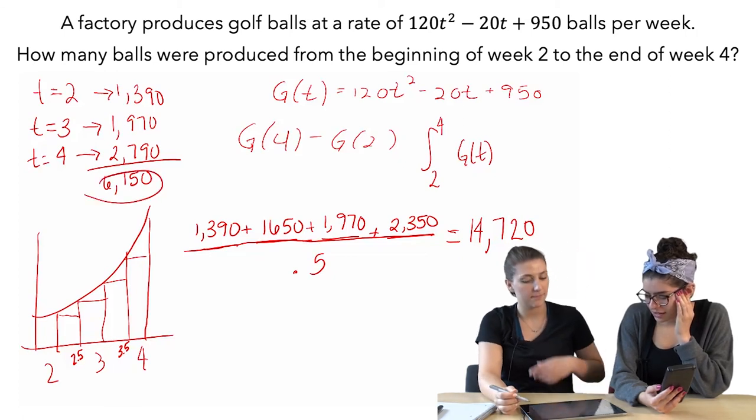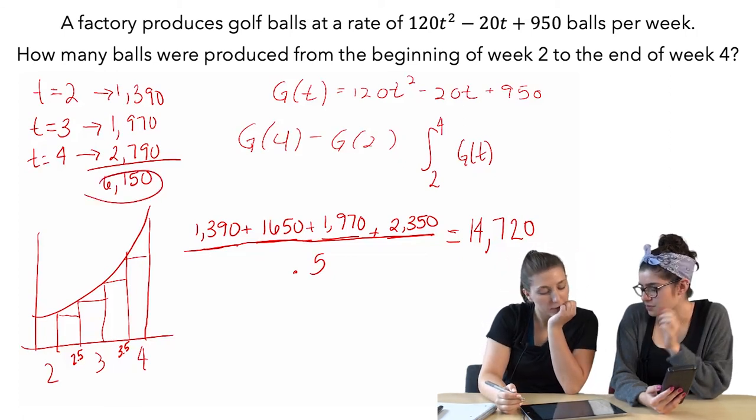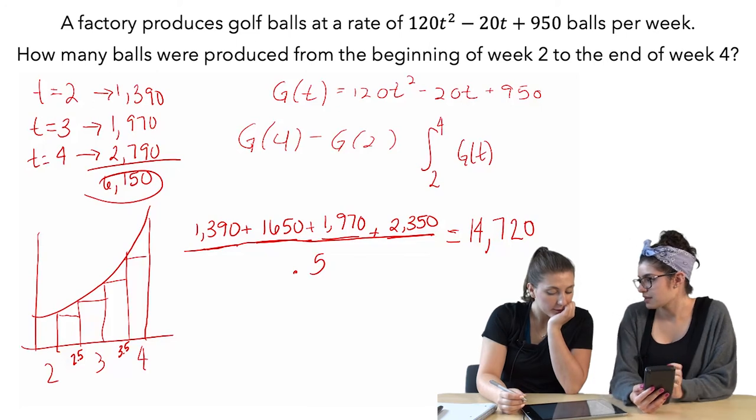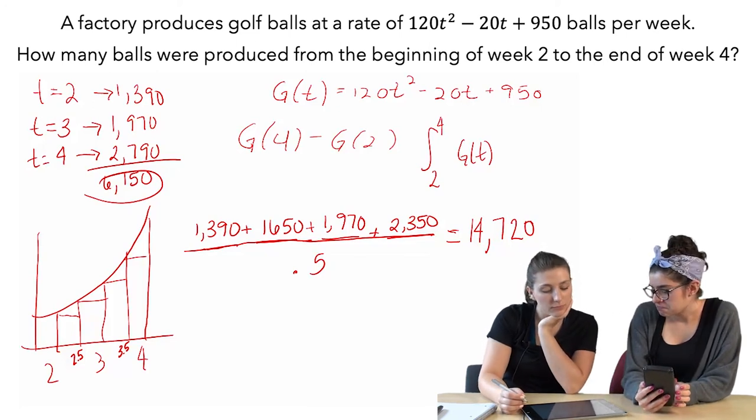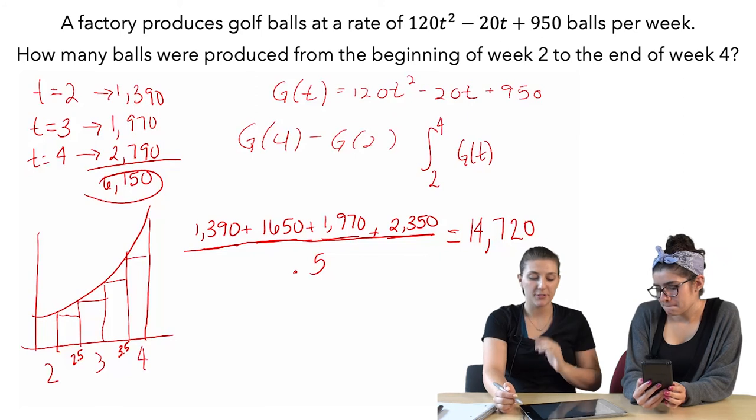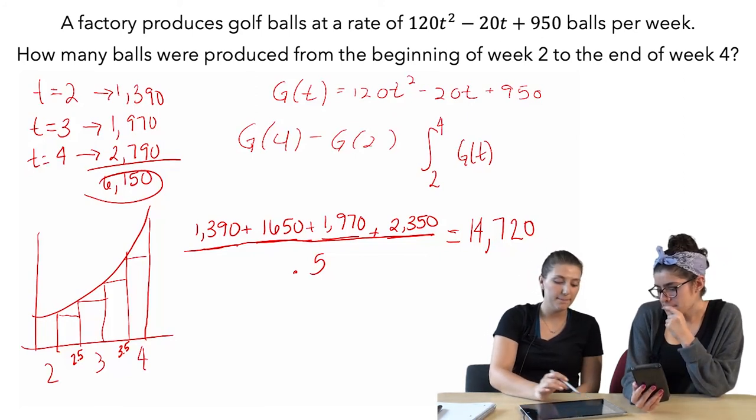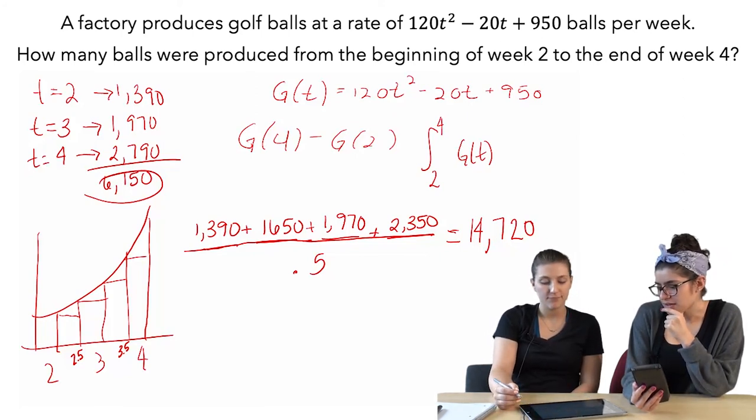Well, I guess we weren't thinking about Riemann sums before so maybe that's why, because we were just adding values at each point. Right. I guess there was just a better way to approximate this. So do you think it's 14,000?